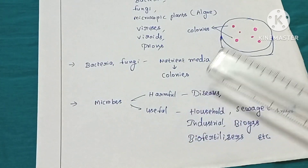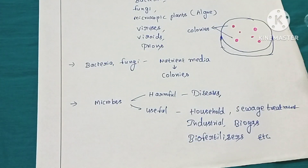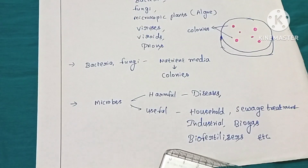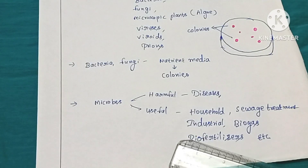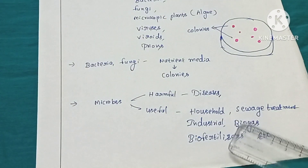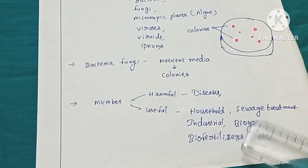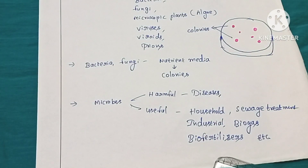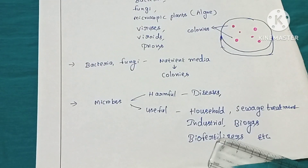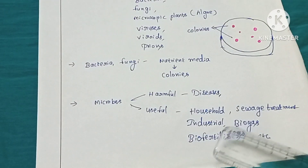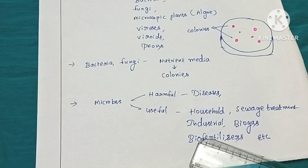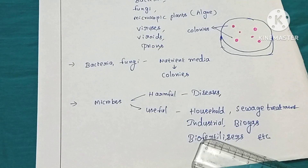There are also useful microorganisms which are beneficial to human beings in many ways — in household activities, sewage treatment, industrial biogas production, bio-fertilizers, and biocontrol measures. We will now see one by one how these microorganisms are useful for human welfare.